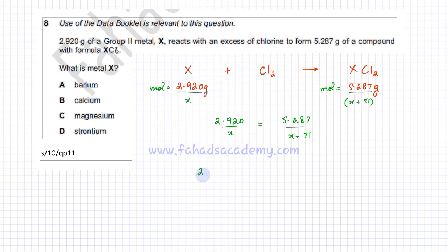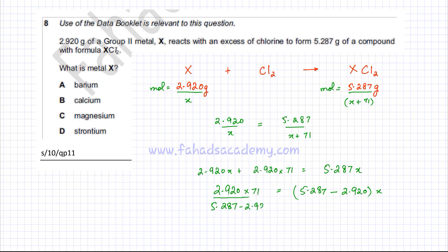It's going to be 2.920 multiplied by X plus 2.920 multiplied by 71. On the other side, if I cross multiply, that would be 5.287 multiplied by X. Getting all the X's together: 2.920 multiplied by 71 equals 5.287X minus 2.920X. I'm going to divide this value by 5.287 minus 2.920, and that's what my X would be equal to.